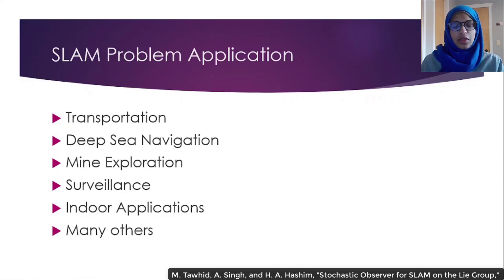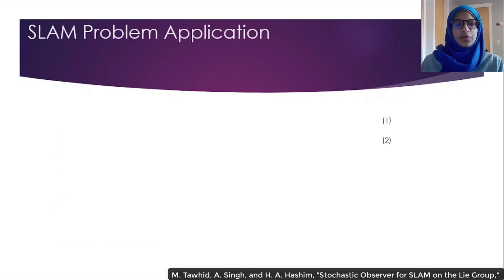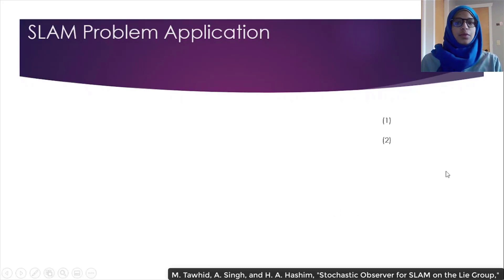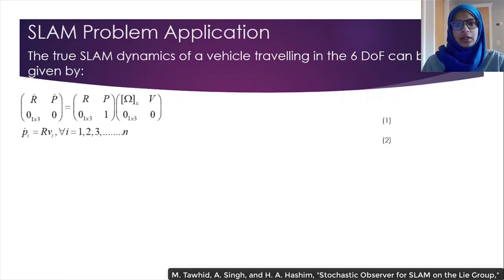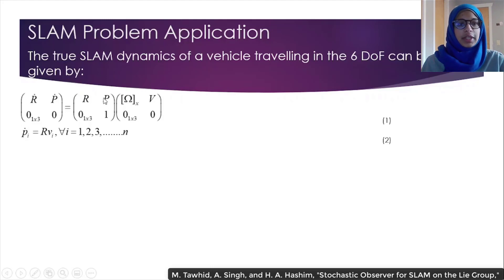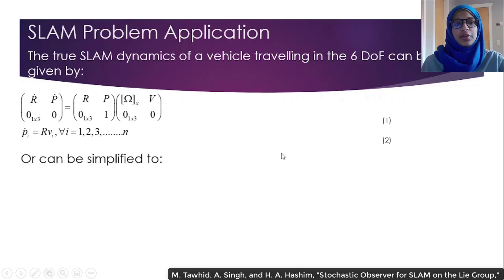Though it's applicable in many areas, what's the true objective? To answer that, let's first look at the problem formulation. For our application, we're considering the true SLAM dynamics of a vehicle traveling in 6 degrees of freedom. This can be represented by Formula 1, which is the derivative of the homogeneous transformation matrix. This is equal to the homogeneous transform matrix multiplied by the velocity matrix. These two multiplied together can also be simplified to the following on the slide.